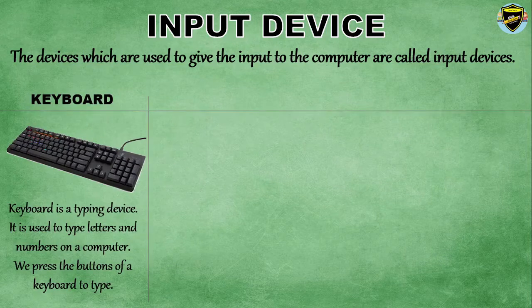Keyboard. Keyboard is a typing device. It is used to type letters and numbers on a computer. We press the buttons of a keyboard to type.